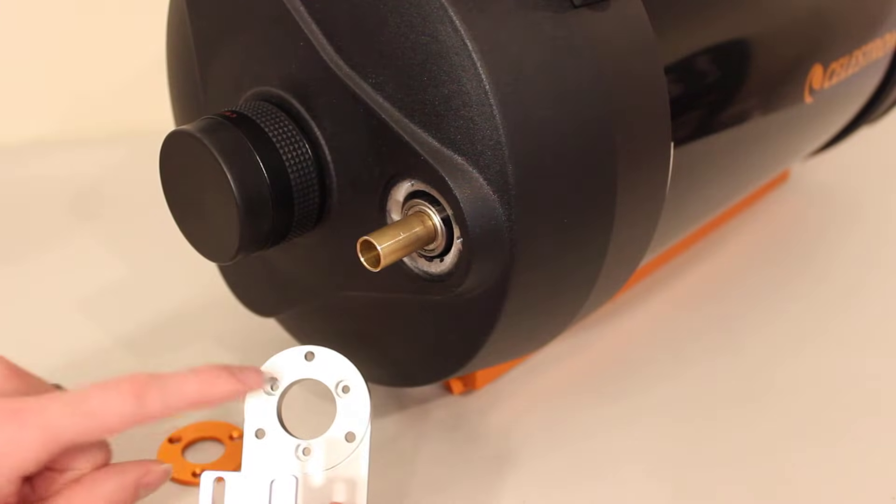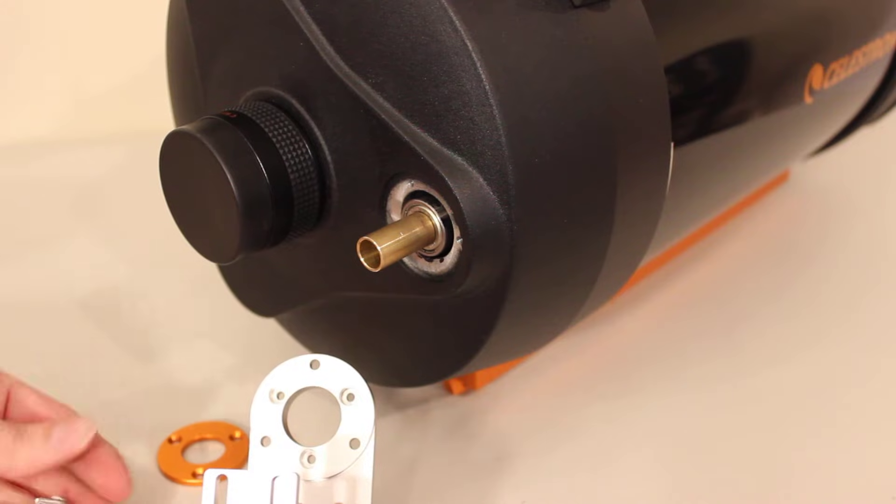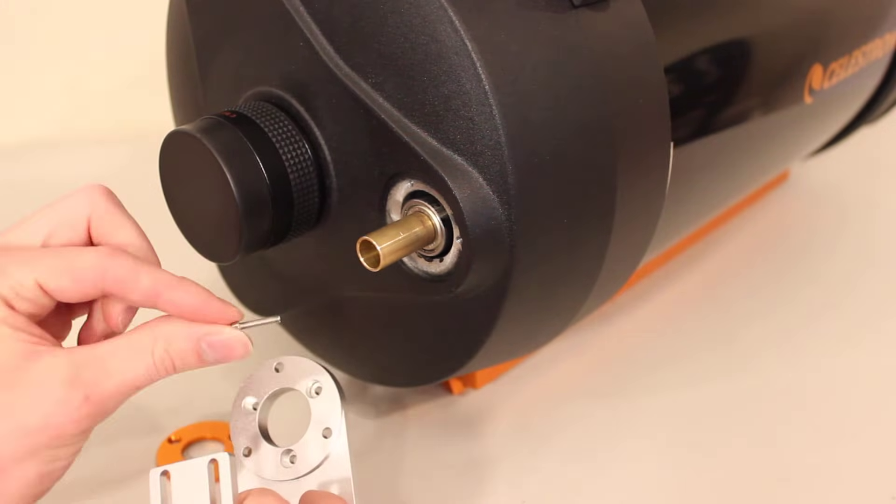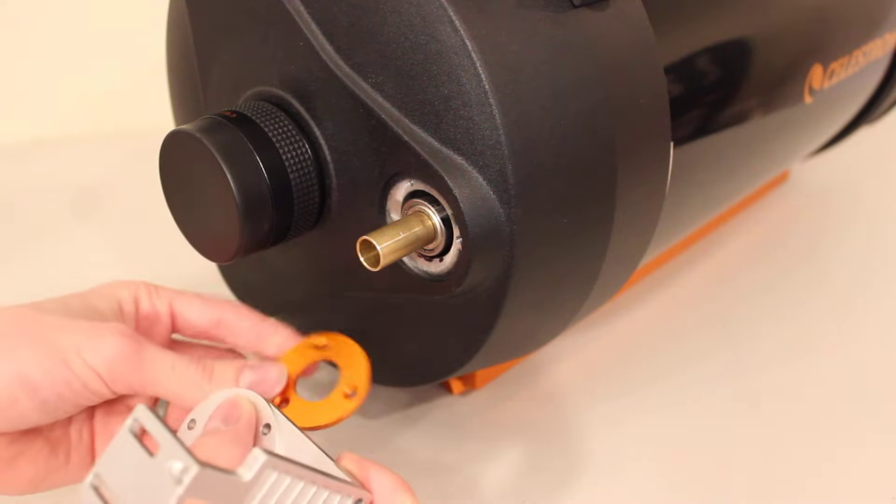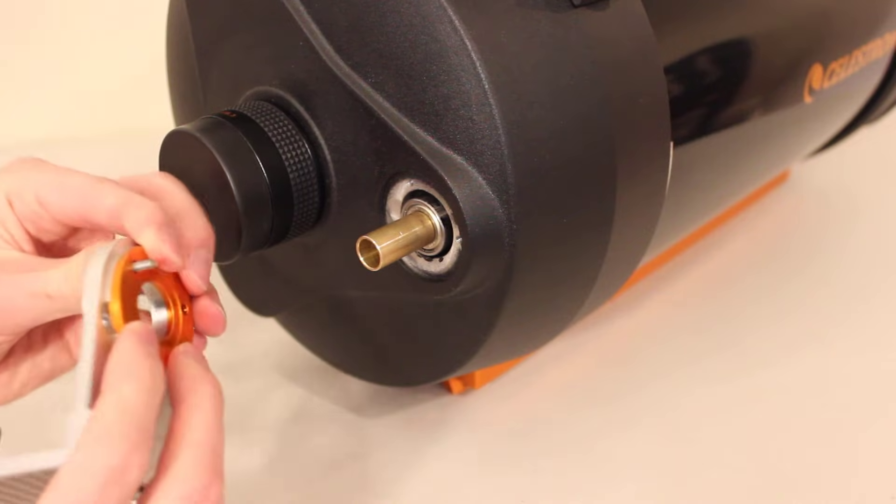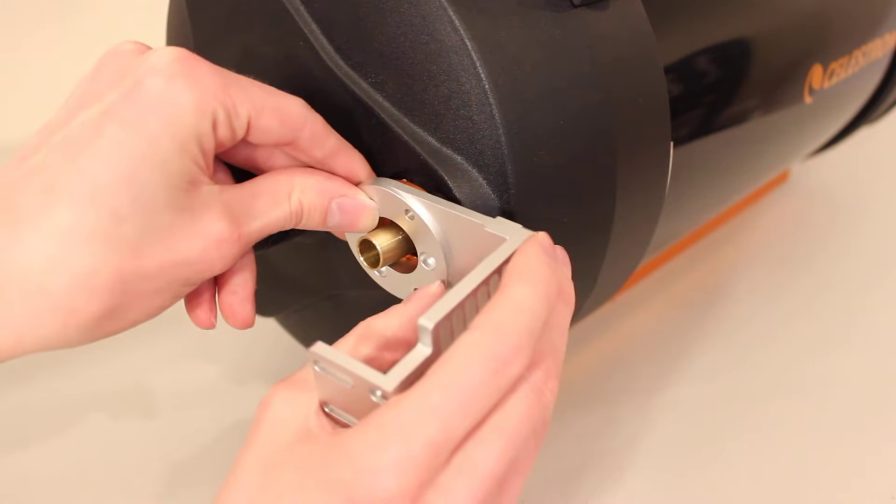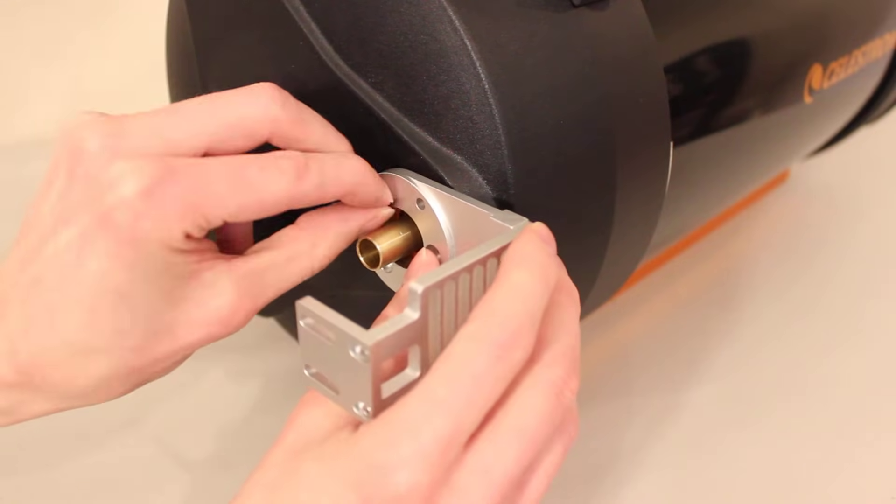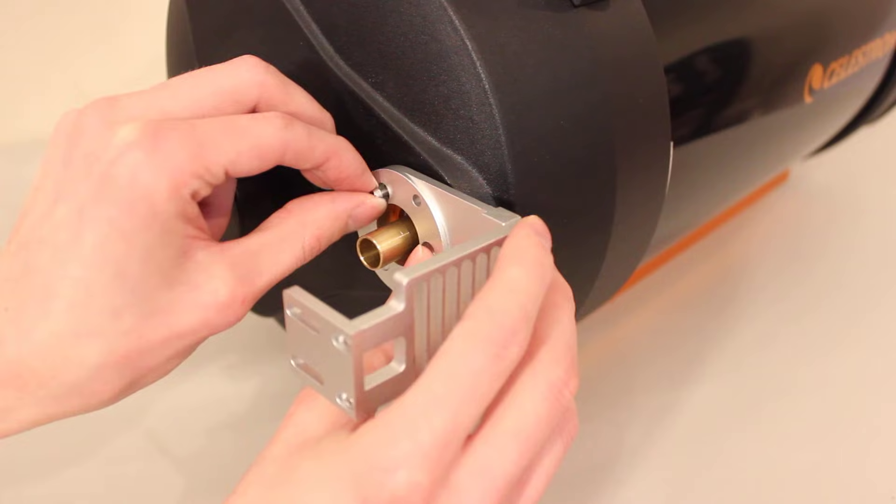Now that I've got this smaller set of recessed holes, I'm going to go ahead and put a bolt through here, one of the bolts that comes with the bracket for securing it to the telescope, and then I'm going to slip my orange ring over that as well. I'm going to line up one of these holes and screw this first part down by hand as best as I can.